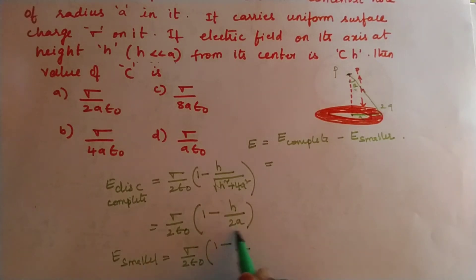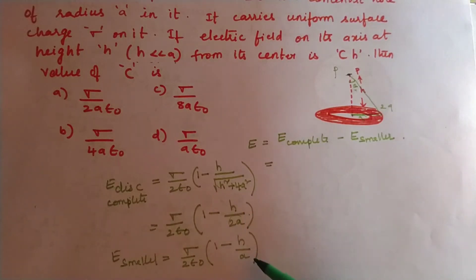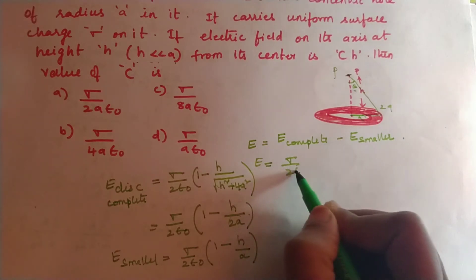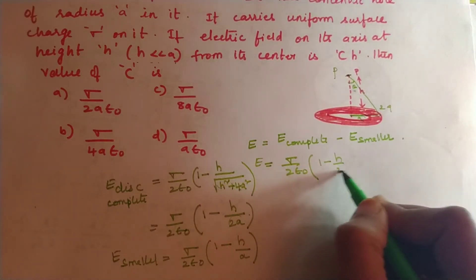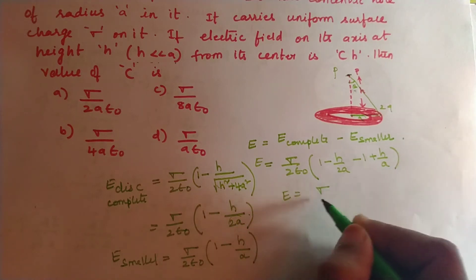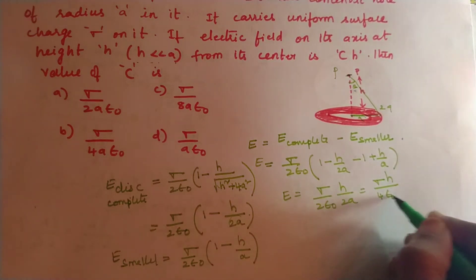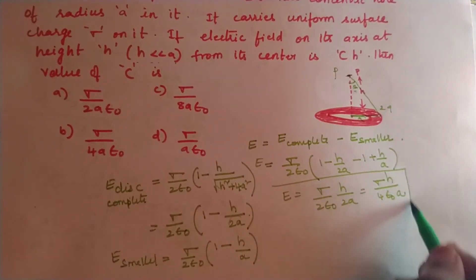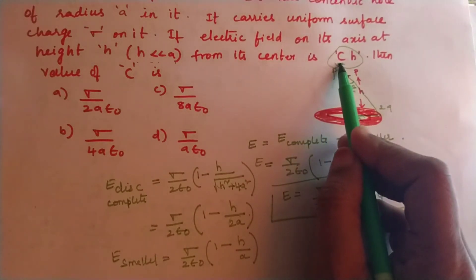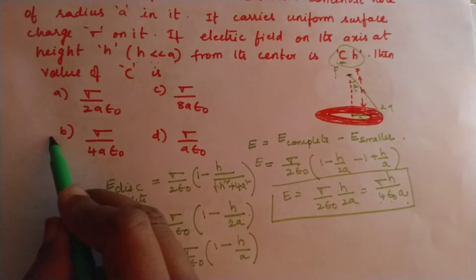The net field is E₁ − E₂ = sigma/(2ε₀) × [(1 − h/2a) − (1 − h/a)] = sigma/(2ε₀) × h/(2a) = sigma h / (4ε₀a). If the field is proportional to C × h, then C = sigma / (4ε₀a). The answer is option B.